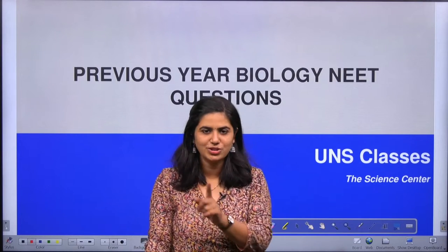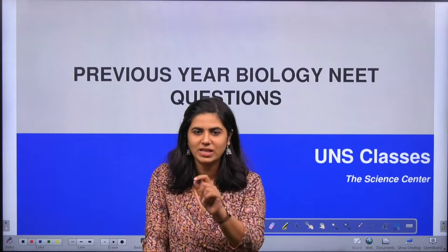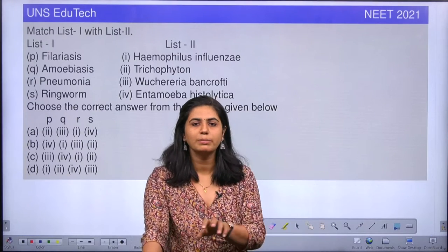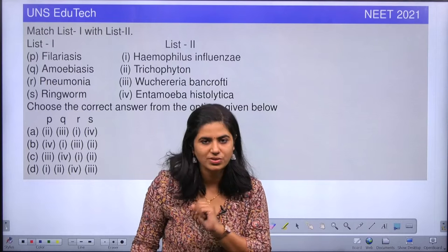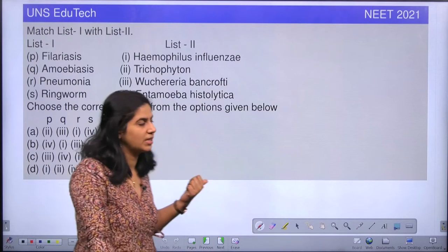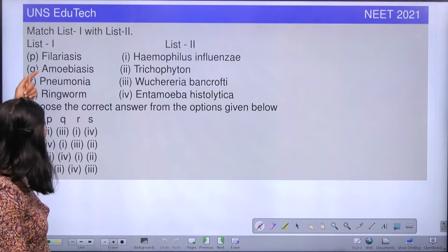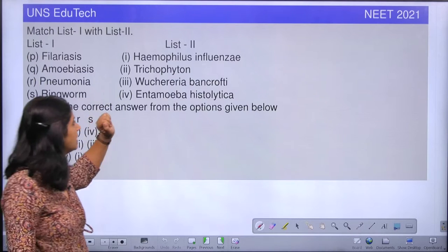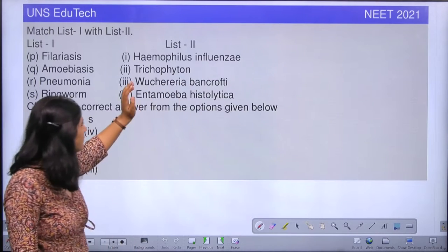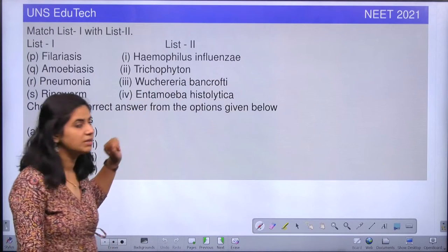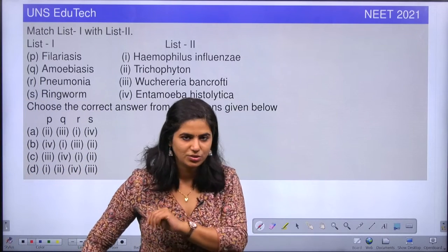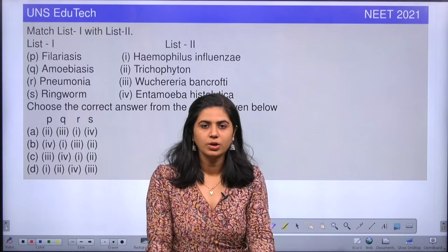Welcome to UNS classes. We are back with biology NEET previous year questions. Today's question is a match-the-following. On the left side the options are filariasis, amoebiasis, pneumonia, and ringworm. On the right side: Haemophilus influenzae, Trichophyton, Wuchereria, and Entamoeba histolytica. Before going to the answer, let's learn a little about each of these.